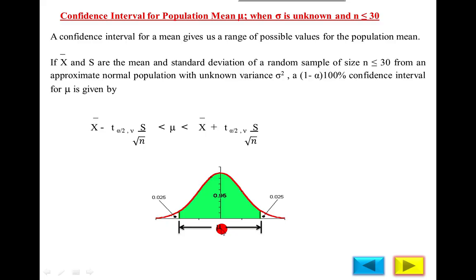In confidence interval, we find the lower and upper value of the parametric value — parameter mean, standard deviation, etc. This is the difference between testing of hypothesis and confidence interval.